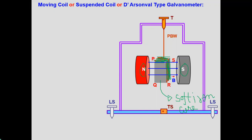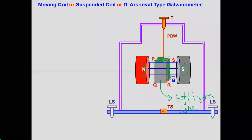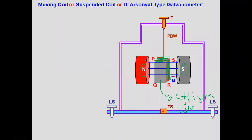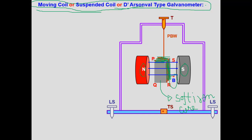On what principle does the galvanometer work? The answer is: the galvanometer works on the principle that when a current-carrying coil is placed in a uniform magnetic field, it experiences a net torque. So the working of the galvanometer is based on torque on a current-carrying coil in a uniform magnetic field. It is known as moving coil galvanometer, or suspended coil galvanometer, or D'Arsonval type galvanometer.